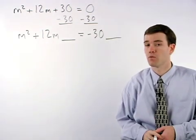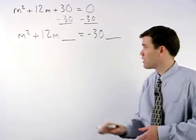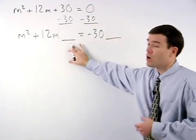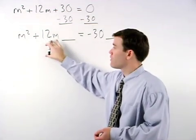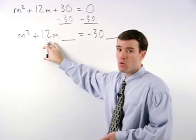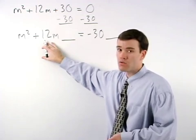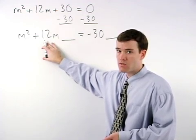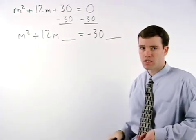The question is, what is that number? Well, it comes from a formula. The number that goes in these spaces always comes from half the coefficient of the middle term squared. In this case, that's half of positive 12, which is positive 6, squared, which is positive 36.